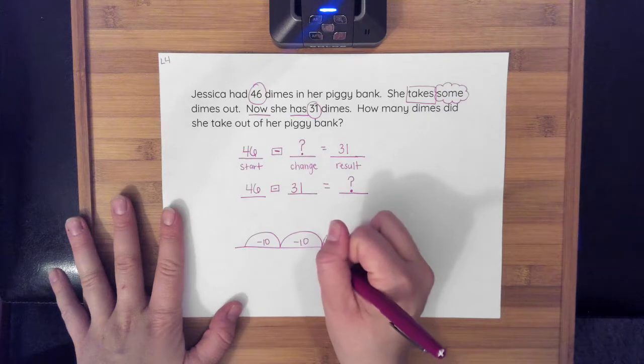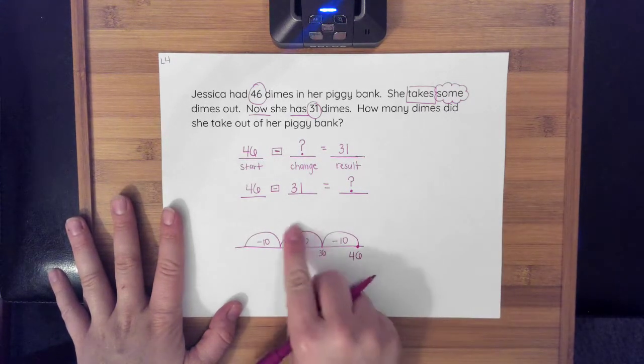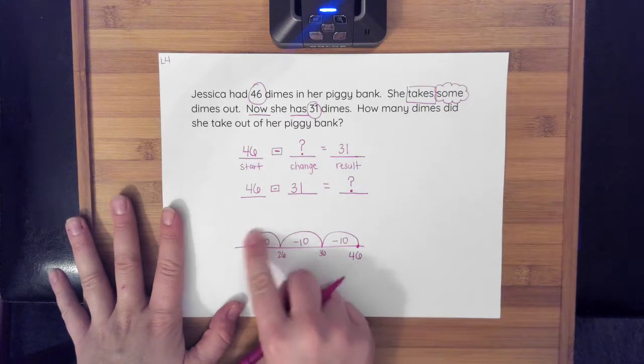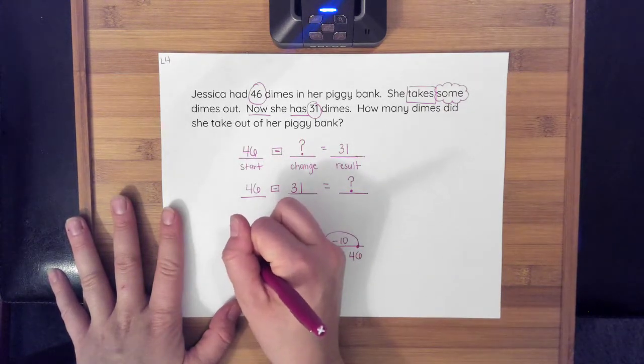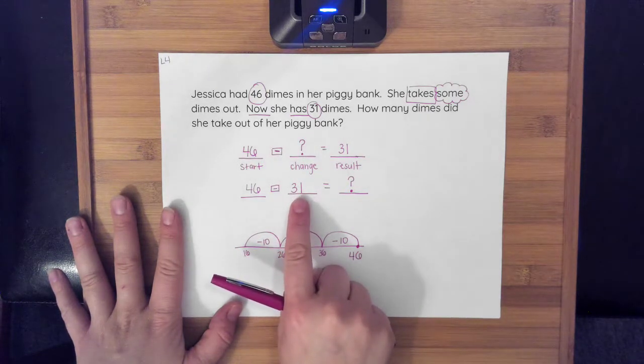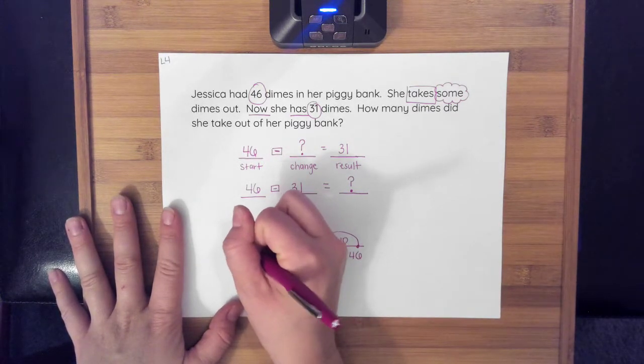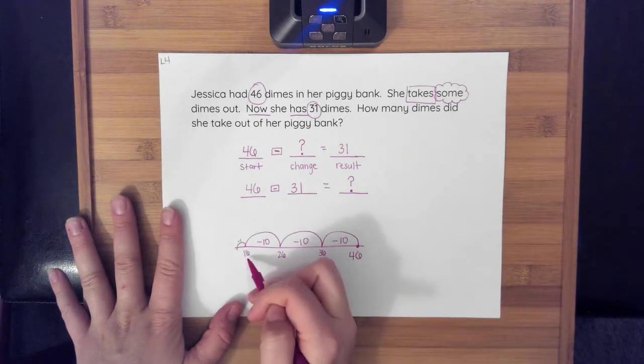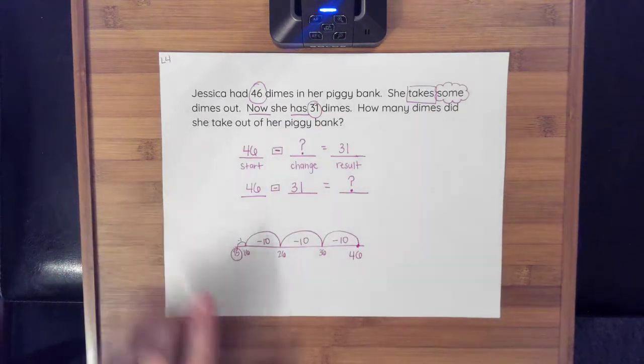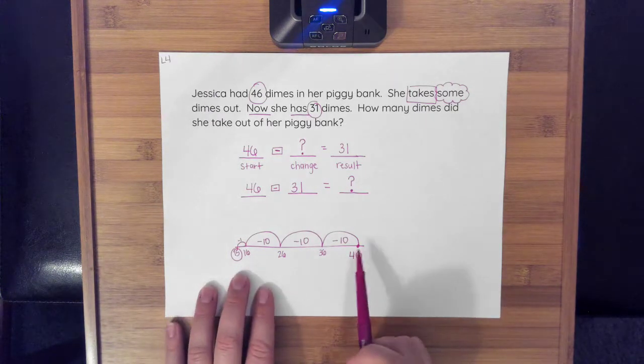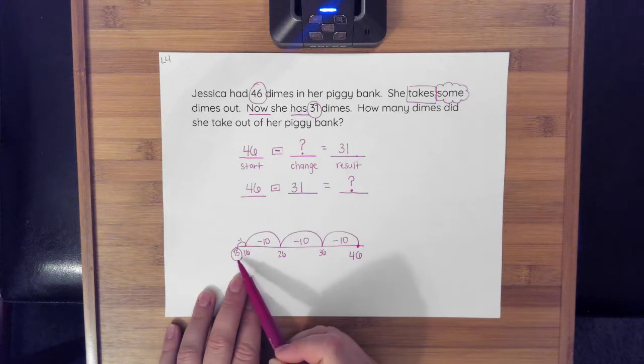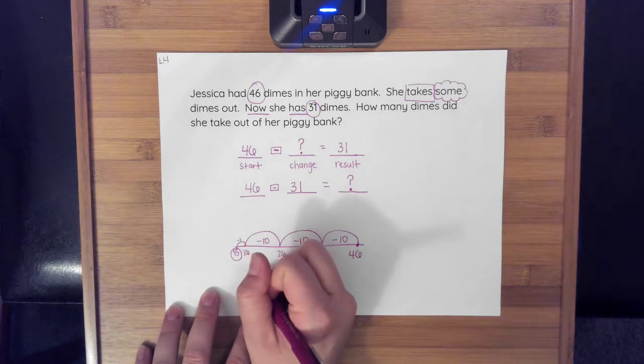So I know if I have 46 and I take 10 away, that's going to get me to 36. 36 minus 10 is going to get me to 26. And 26 minus 10 is going to get me to 16. Well, if I look, I took away 30, but I still have one to take away. So I'm going to take away that one. And I know 16 take away one is 15. So when I did 46 minus 31 on my number line, I got to 15. That is my result. My result is 15.